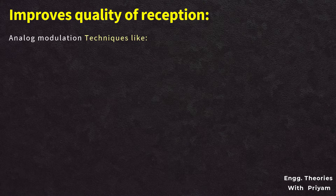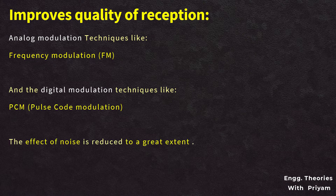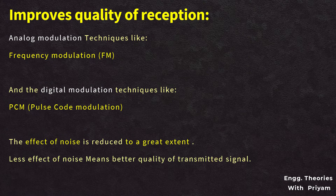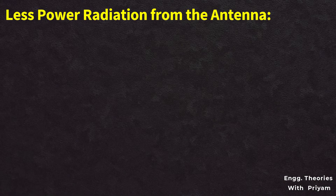Improving the quality of reception: using analog modulation techniques like frequency modulation and digital modulation techniques such as pulse code modulation (PCM), the effect of noise can be reduced to a great extent. Less effective noise means better quality of the transmitted signal, achieved with the help of modulation techniques.